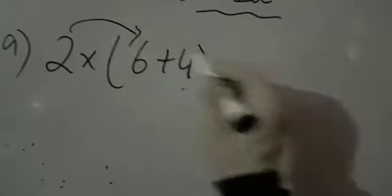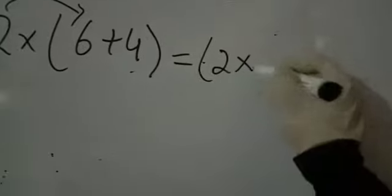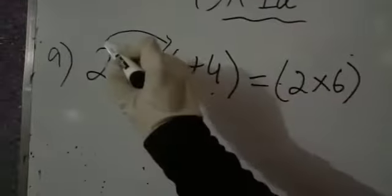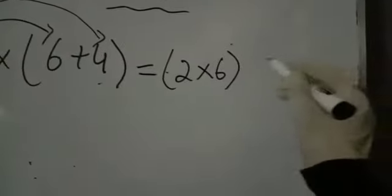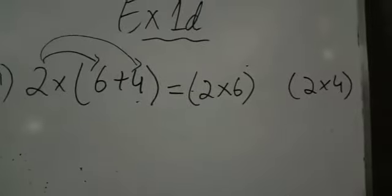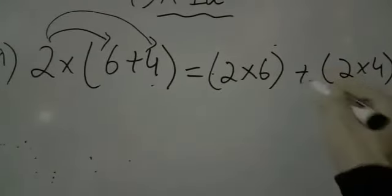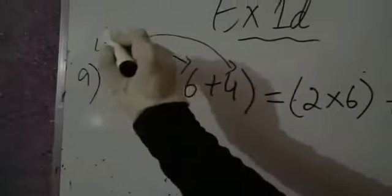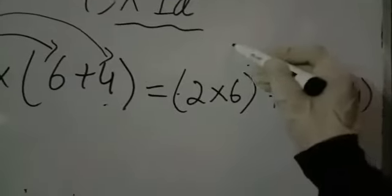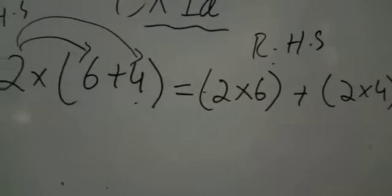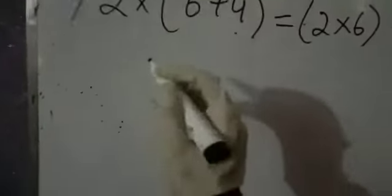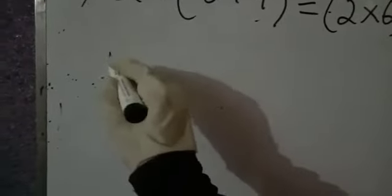Now I will show you how the distributive property of multiplication will be satisfied. We start our solution: we will multiply 2 into 6, then multiply 2 again with 4 and write here 2 into 4, with plus in the middle. This is your left hand side and this is your right hand side.